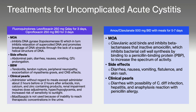Then we have Augmentin — amoxicillin/clavulanate — at 500 milligrams twice daily with meals for five to seven days. The main issues with this medication include diarrhea, nausea, and vomiting, as well as the possible risk of hepatitis and anaphylaxis reaction in patients who have a penicillin allergy.